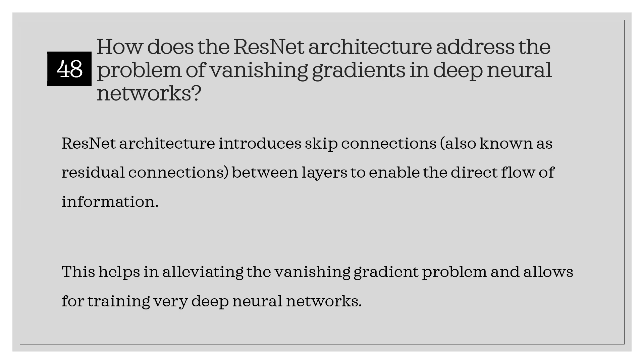How does the ResNet architecture address the problem of vanishing gradients in deep neural networks? ResNet architecture introduces skip connections, also known as residual connections, between layers to enable the direct flow of information. This helps in alleviating the vanishing gradient problem and allows for training very deep neural networks.